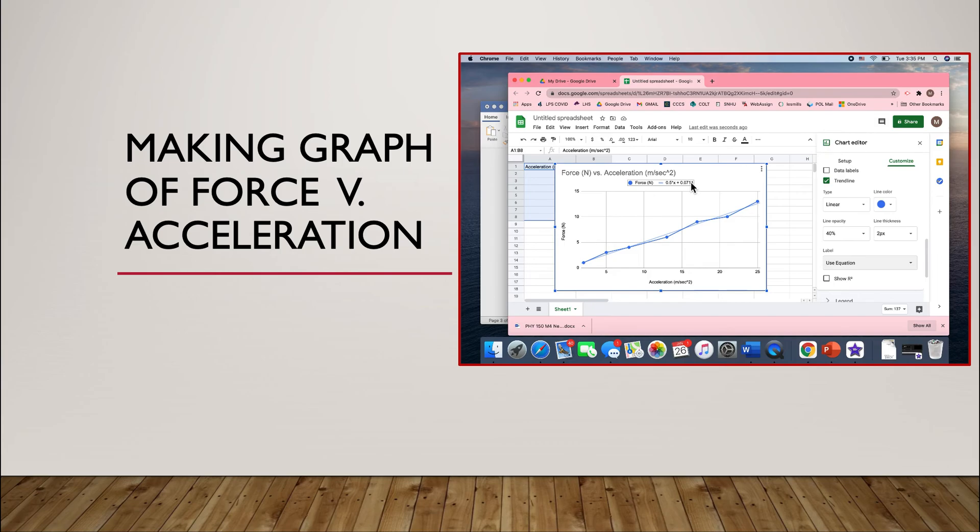The equation of the line is right here. The slope of the line is right here. And that's important because it's the slope of this line that we're comparing to the mass of the entire system. Remember that force equals mass times acceleration. So that's why the slope is equal to the mass in this case, because we've left the mass constant.